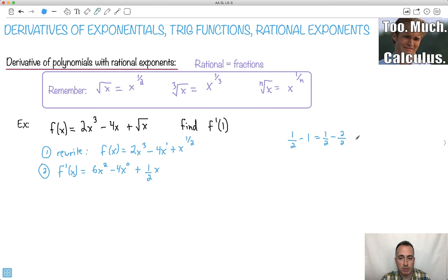So 1 half minus 2 halves is, let's see, that gives me minus 1 half. That's where I'm going to get this number right here, which is going to be minus 1 half. Not obvious. This only came because you did this minus 1.